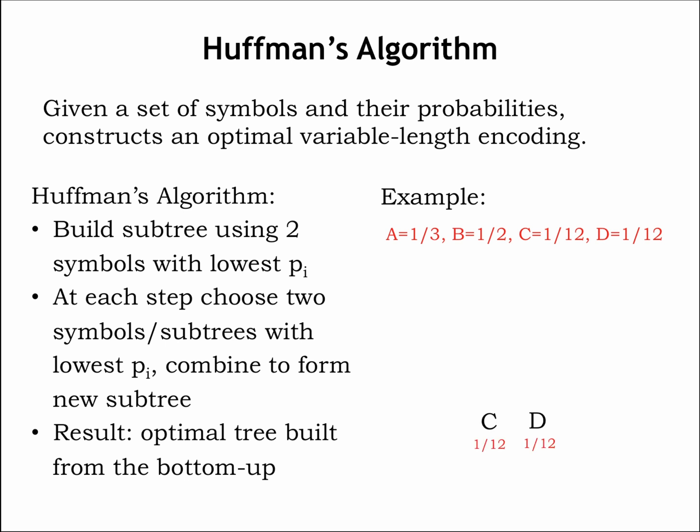In our running example, the two symbols with the lowest probability are C and D. Combine the symbols as a binary subtree with one branch labeled 0 and the other 1. It doesn't matter which labels go with which branch.